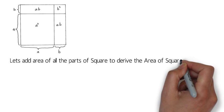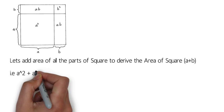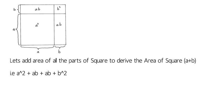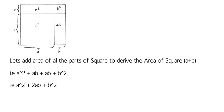Now let's add the area of the small parts to derive the area of the square: a² + ab + ab + b², which is a² + 2ab + b².